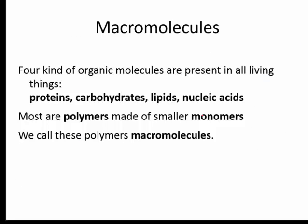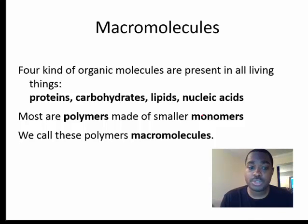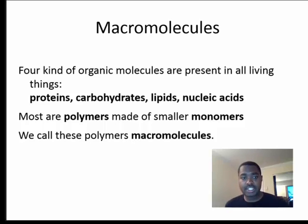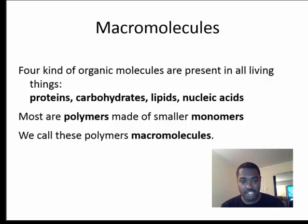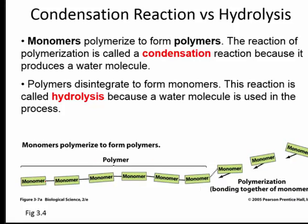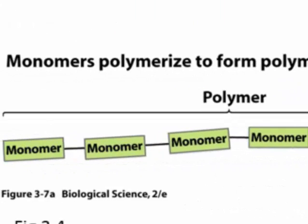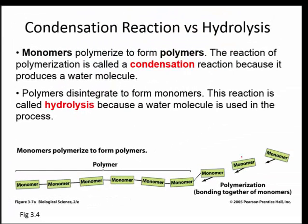What macromolecules do we study? Proteins, carbohydrates, lipids, and nucleic acids. Most of these are polymers — proteins, carbohydrates, and nucleic acids can form polymers. A polymer is a chain made from repeating molecules, which we call monomers. We talked briefly about amino acids — an amino acid is one kind of monomer found in proteins. If we join together different amino acids in a chain, those monomers form a polymer, and that polymer is what we call a polypeptide. The polymerization of a molecule occurs through reactions we call condensation reactions.